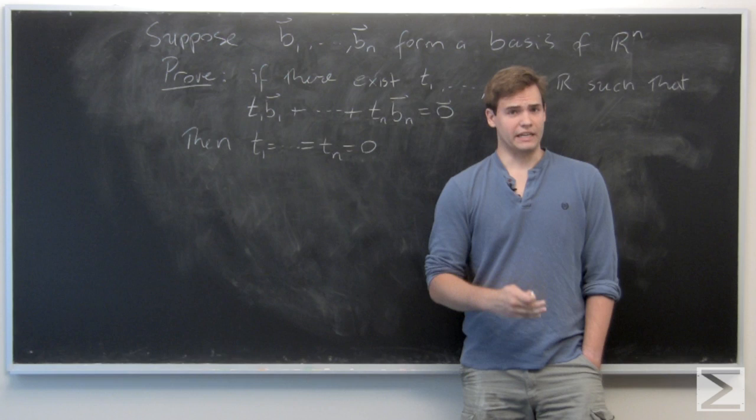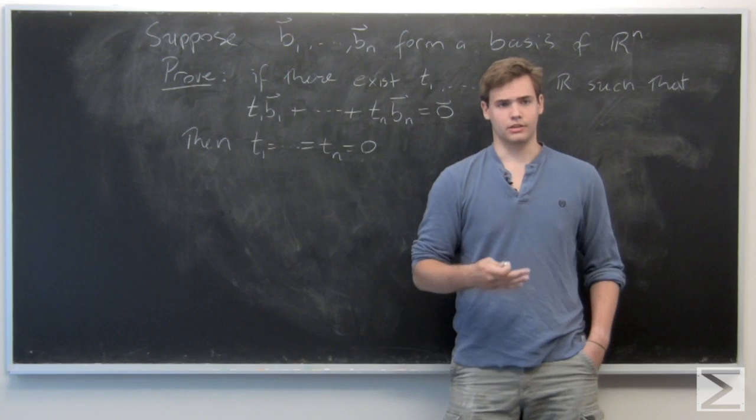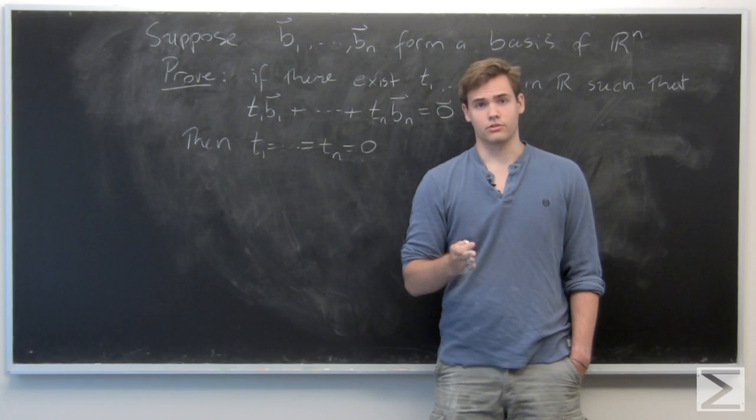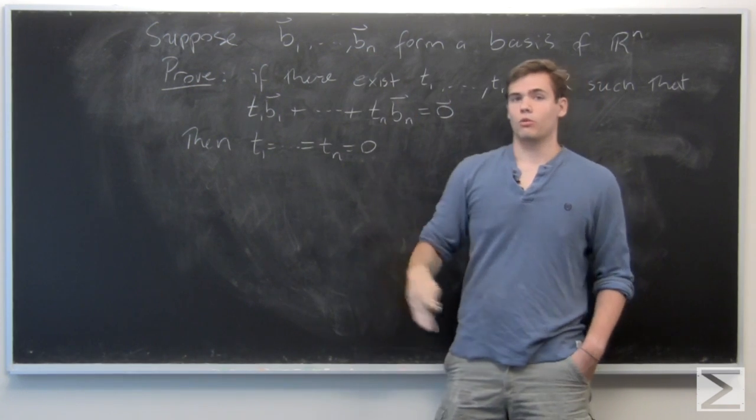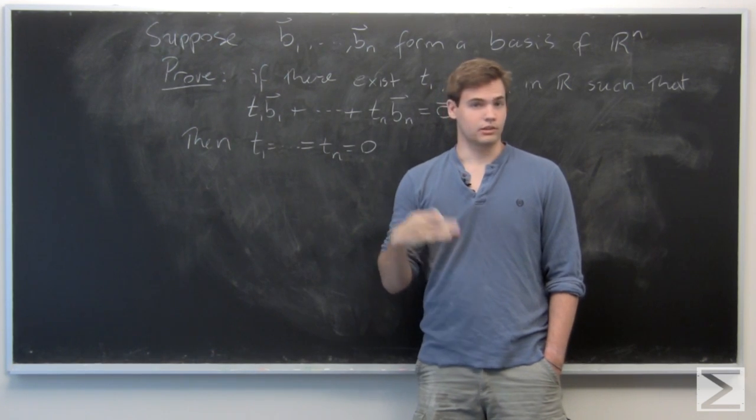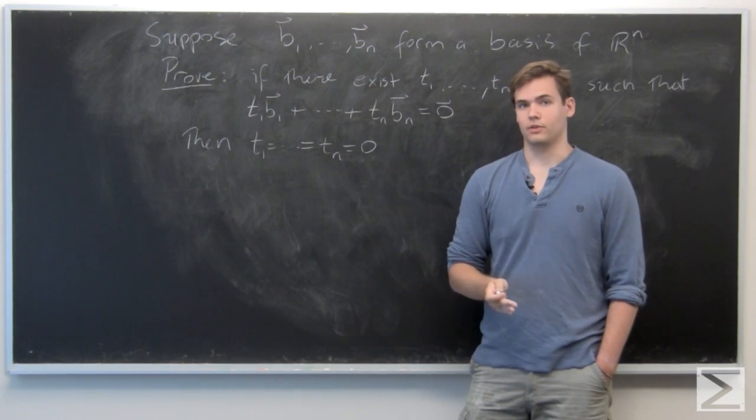We very often want to talk about a basis of that vector space. So that means it's a collection of, say for R^n, it's a collection of n vectors. So here we've labeled them B₁ through Bₙ, where any other vector in the space, in this case R^n, can be written as a unique linear combination of these basis vectors.